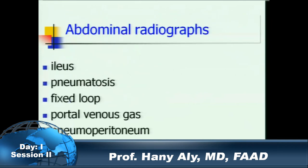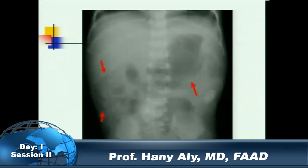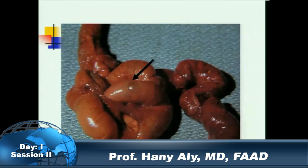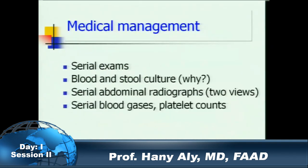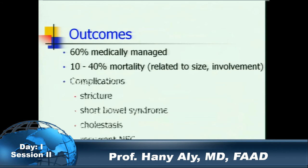On x-ray, we look for pneumatosis. You can see pneumatosis around the liver area and sub-serosal pneumatosis with these air blebs. Necrotic areas appear as brownish regions. Outcomes: 60 percent mortality in surgical cases, 60 percent medically treated, with 10 to 40 percent mortality, and the complications are all well known.